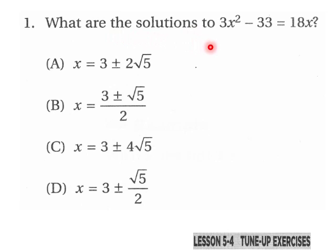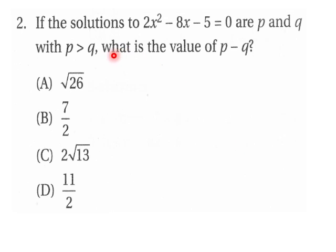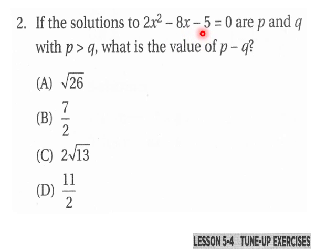Number two: If the solutions to 2x squared minus 8x minus 5 equals zero are p and q with p being greater than q, what is the value of p minus q? So now we have a situation here, we have p minus q, what is the value of that?